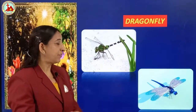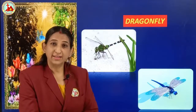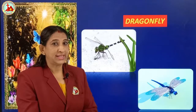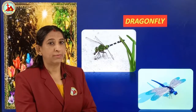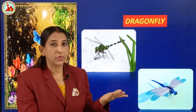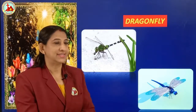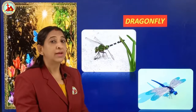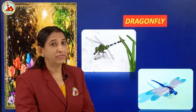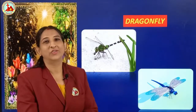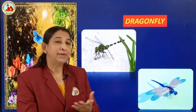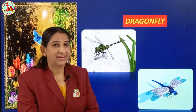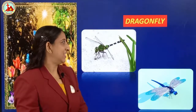Next is dragonfly. This insect we see most probably in rainy seasons. Which insect is this? Dragonfly. This is also colorful. Repeat after me — dragonfly.